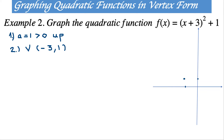Because the x-coordinate of the vertex is negative 3, the axis of symmetry is going to be x equal to negative 3. Let me draw in the axis of symmetry — it's this vertical line that divides the graph of the function into two symmetrical sides.